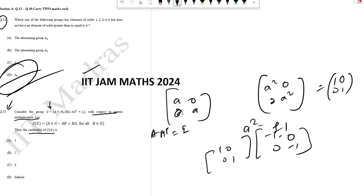This means the center contains two elements. So option number 2 is the correct answer. The cardinality is therefore 2.